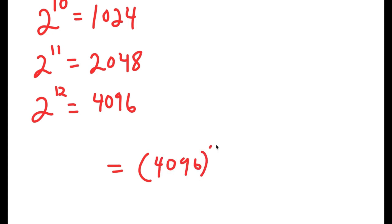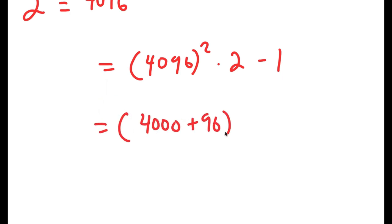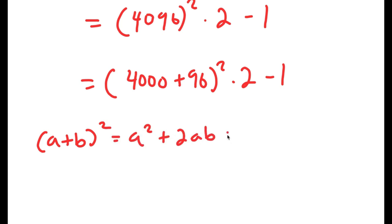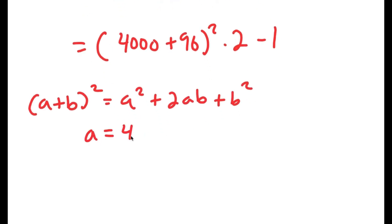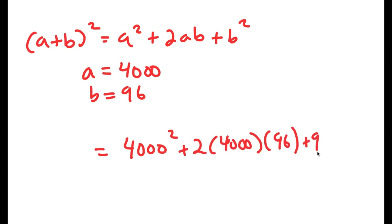So now I get 4096 squared times 2 minus 1. I'm going to simplify this as 4000 plus 96, squared, times 2 minus 1. The reason I'm doing this is because 4096 squared is really hard to calculate by itself. So if I change it to 4000 plus 96, squared, I can use the property A plus B squared equals A squared plus 2AB plus B squared. In this case, A is 4000 and B is 96. This turns into 4000 squared plus 2 times 4000 times 96 plus 96 squared.